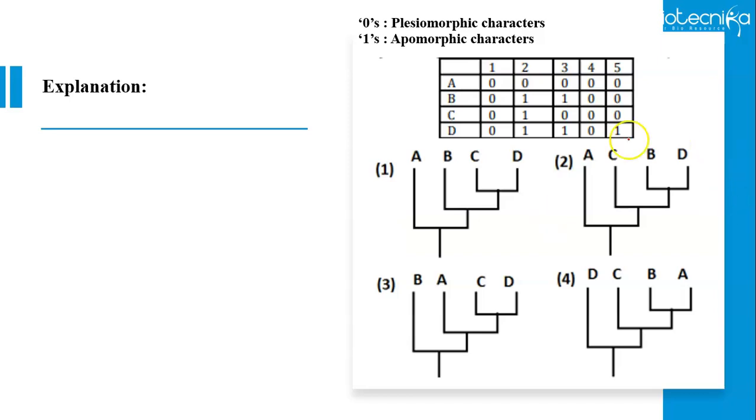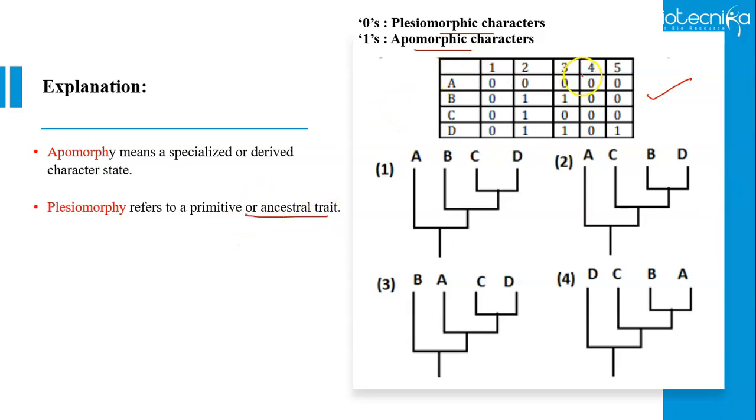Similarly, in this question, a data matrix, a character table is given. 0 represents plesiomorphic character and 1 represent apomorphic characters. Apomorphic, I have already told you, it means a specialized or derived character state, whereas plesiomorphic refers to primitive or ancestral trait. If we analyze this data matrix, we will find that for A group, 1 to 5 characters are plesiomorphic because you can see 0 is given. However, for B, both 2nd and 3rd are apomorphic characters. For C, only 2 is an apomorphic character. And for D, 2, 3 and 5 are apomorphic characters.